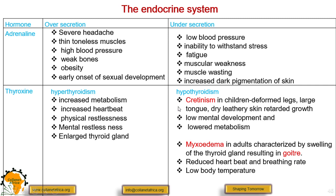Undersecretion of thyroxine is called hypothyroidism. In children, hypothyroidism causes cretinism, characterized by poor leg formation, large tongue, dry leathery skin, retarded growth, low mental development, and lowered metabolism.